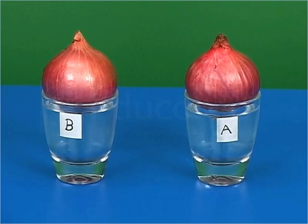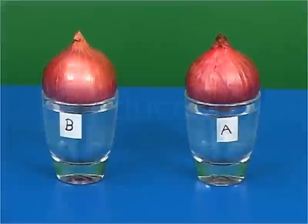After that, leave both the tumblers undisturbed for three to four days. Observe the onion bulbs each day to note the growth of roots.